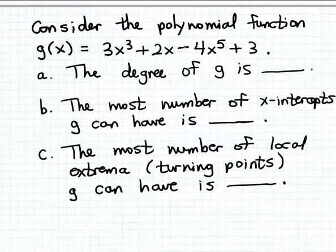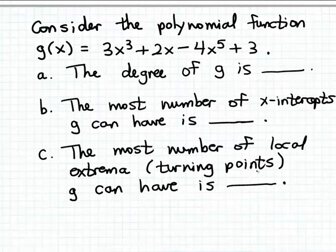In this example, we're given the formula for a polynomial function named g. First we want to determine the degree of g, and then we want to use that degree to determine the most number of x-intercepts that g can have, and the most number of local extrema, or turning points, that g can have.